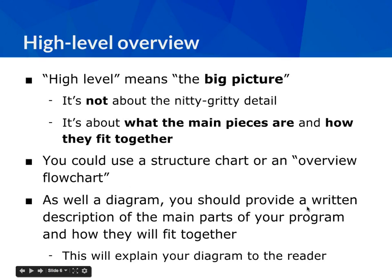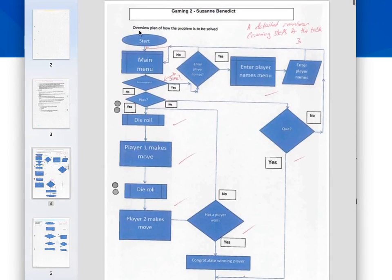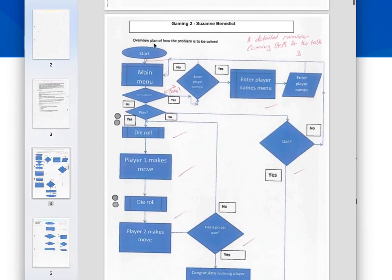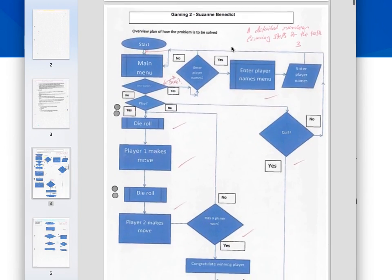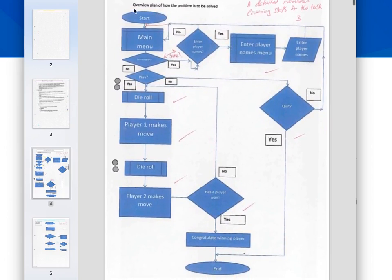As well as a diagram, you should give some kind of description or annotation. You'll notice in the example it says 'overview plan of how the problem is to be solved' — short and sweet, but it tells the examiner what they're looking at. You must give some kind of explanation of what you are presenting, so you're not just throwing a chart at the reader without context.